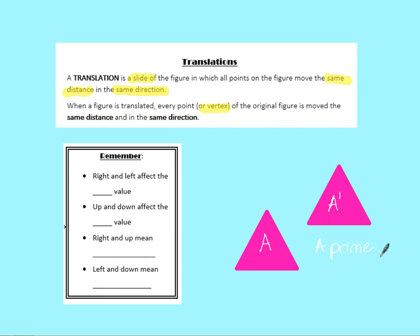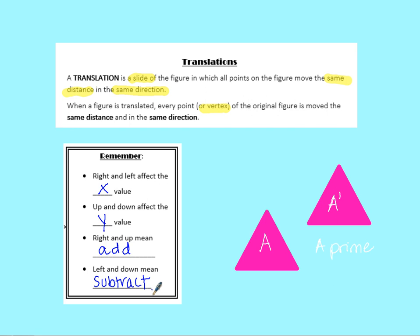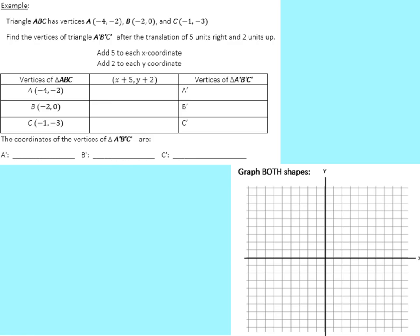Something to remember: in the bottom right corner of page two — when you move right or left on your coordinate grid, that affects your x value. Moving up or down affects your y value. Moving right or up means you're adding (getting bigger); moving left or down means you subtract (getting smaller). Those are key things to add to your notes.